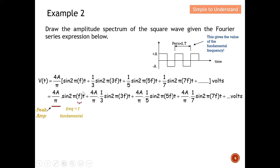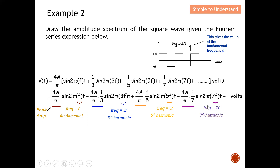Firstly, this term with the lowest frequency is the fundamental frequency, which has a peak amplitude of 4a/π. Next, we have the third harmonic — its peak amplitude is (4a/π) × (1/3). For the fifth harmonic, the peak amplitude is (4a/π) × (1/5). For the seventh harmonic, the peak amplitude is (4a/π) × (1/7). This is essentially what we need in order to draw the amplitude spectrum or frequency domain.